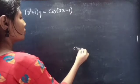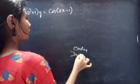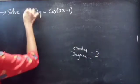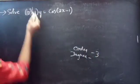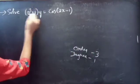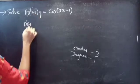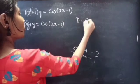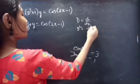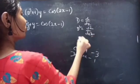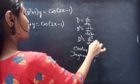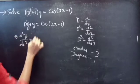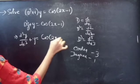Firstly, let's find the order and degree of the given differential equation. Identify the highest derivative here — D³ is the highest derivative, so 3 will be our order. The highest power of the highest derivative is our degree, so the degree is 1. We can write the equation as d³y/dx³ + y = cos2x - 1.